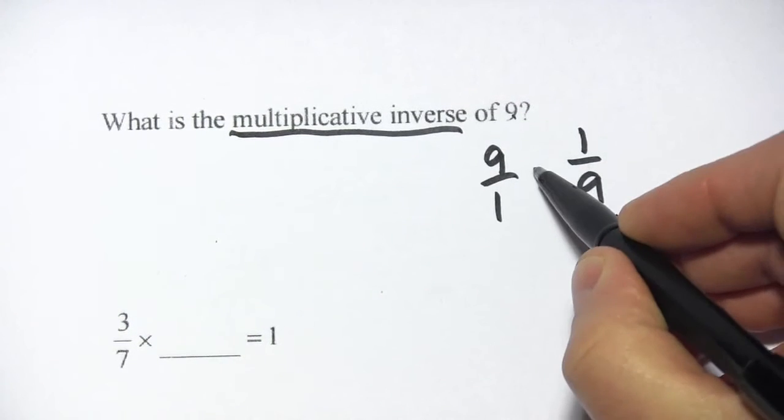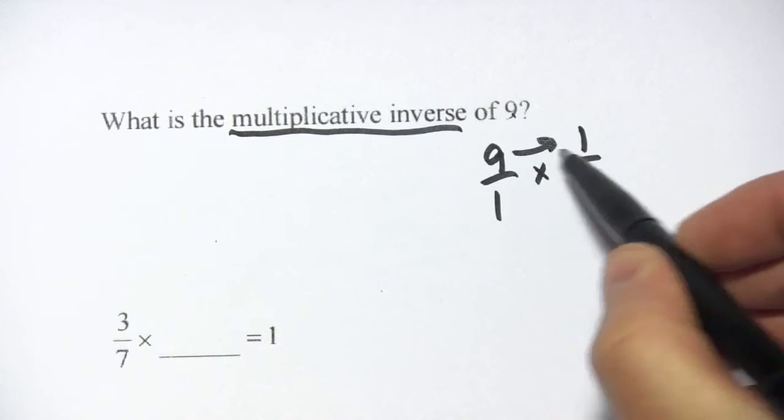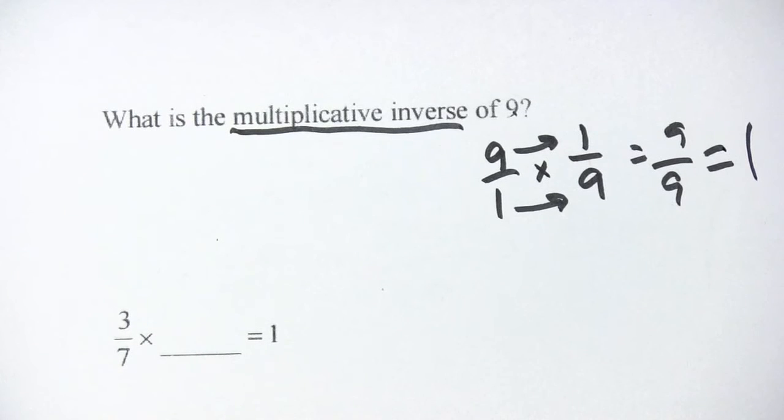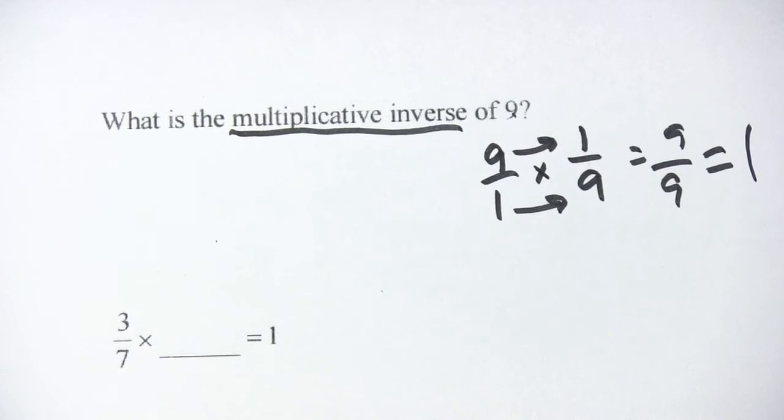But watch this. If we multiply these two together, 9 times 1 is 9, 1 times 9 is 9, we get 9 over 9, that equals 1. So that's a property of numbers and their inverses. If you multiply them, they come out to 1.